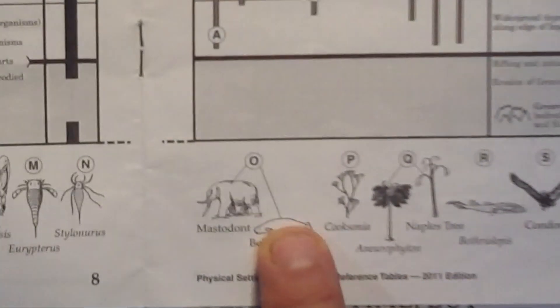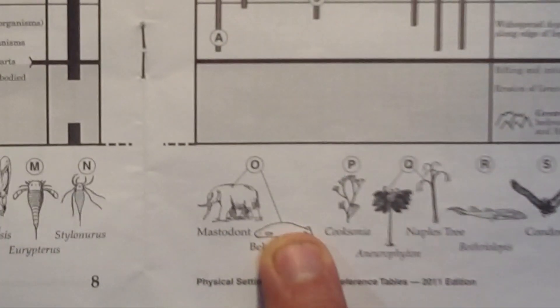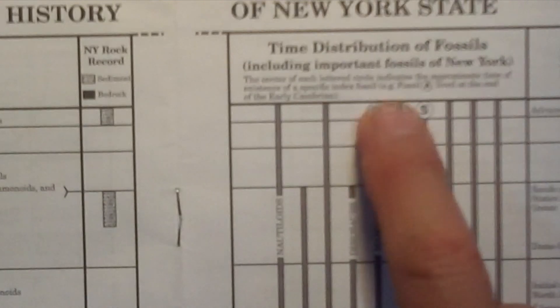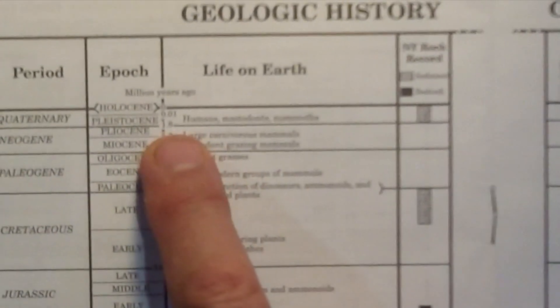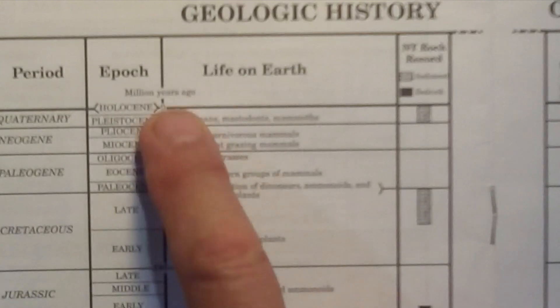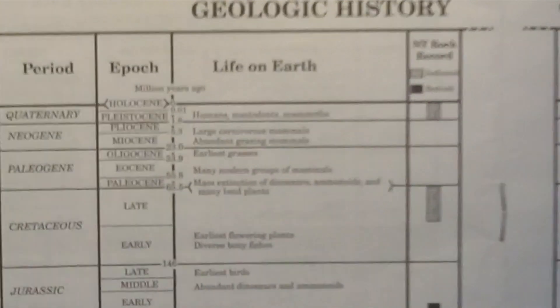The last organism matches up with letter O, which matches up with a beluga whale, and you can see it entails this whole range — so that could be anywhere between 1.8 million years ago to present.